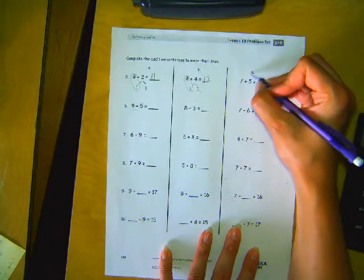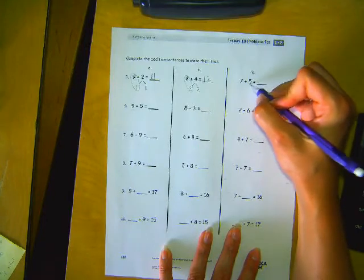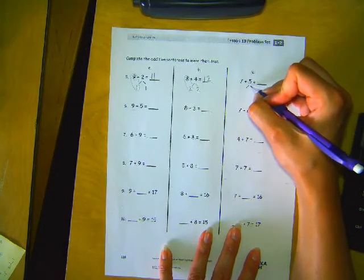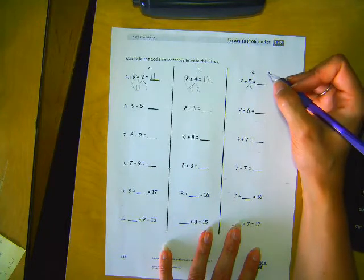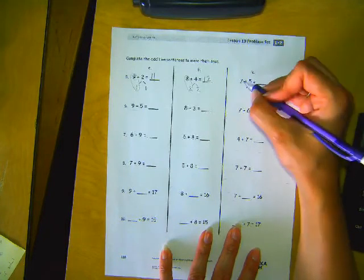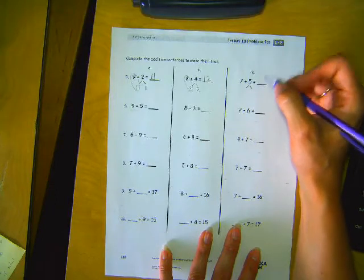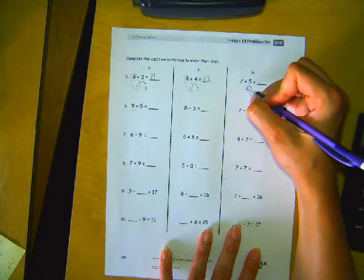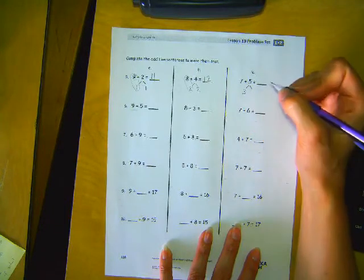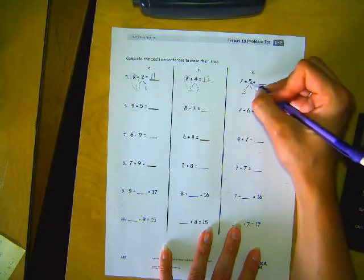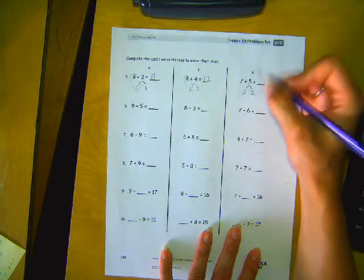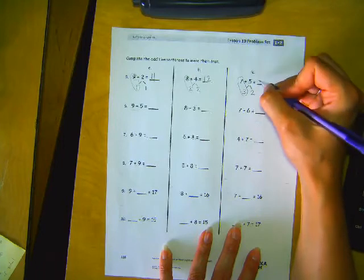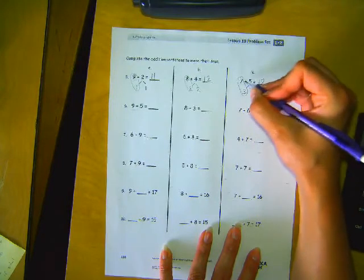Let's go to C. 7 plus 5 equals blank. We're going to break the 5 up into 2 parts. How many does 7 need to make a friendly 10? So 5 is made up of 3 and 2. Here's our friendly 10 plus 2 more. That makes 12. So 7 plus 5 equals 12.